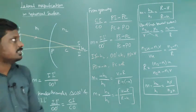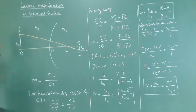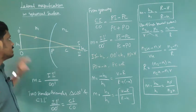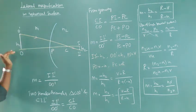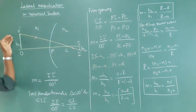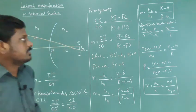In this class we discussed lateral magnification in spherical surface. The extended object is placed perpendicular to the principal axis, and the image is formed at II'. From this we derived the lateral magnification.